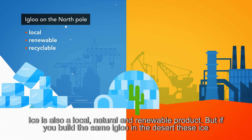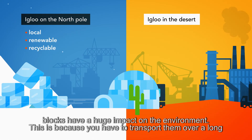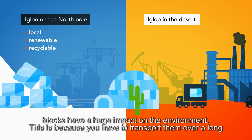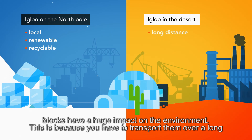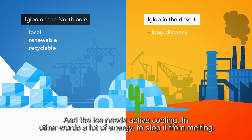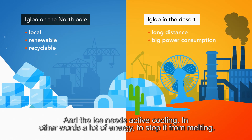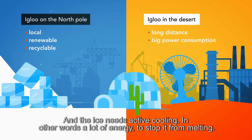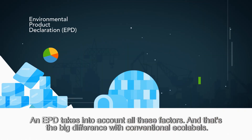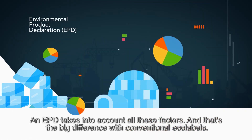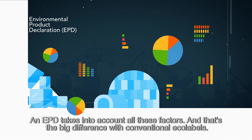But if you build the same igloo in the desert, these ice blocks have a huge impact on the environment. This is because you have to transport them over a long distance, and the ice needs active cooling — in other words, a lot of energy to stop it from melting. An EPD takes into account all these factors, and that's the big difference with conventional eco-labels.